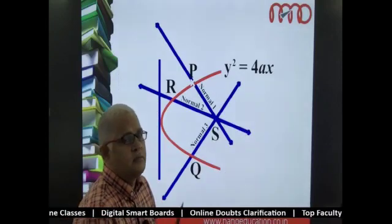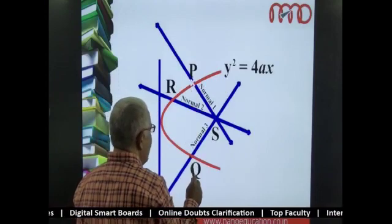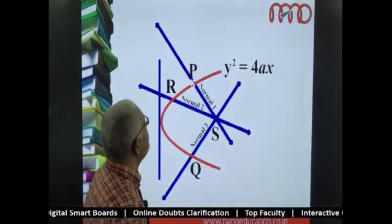of the three normals. Then the points P, R, and Q become what? They become co-normal points.